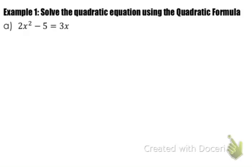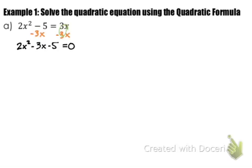In example 1, we're going to solve the quadratic using the quadratic formula. The very first thing you need to do is make sure the equation is set equal to 0. Right now it's set equal to 3x, so we subtract 3x from both sides and rewrite the equation as 2x squared minus 3x minus 5 equals 0. This doesn't have a GCF other than 1, so we'll use the quadratic formula.